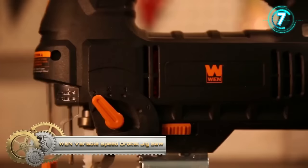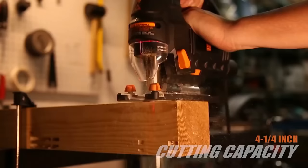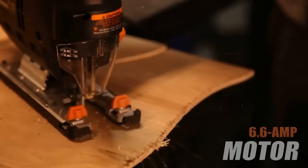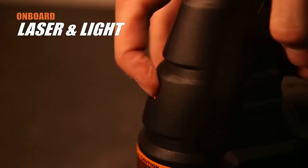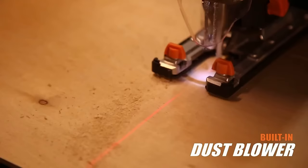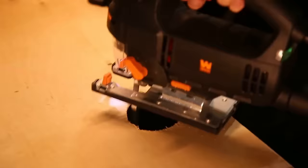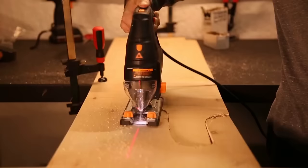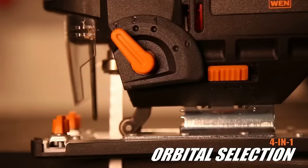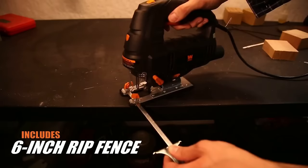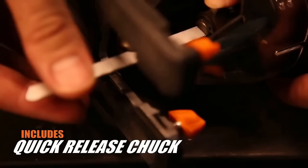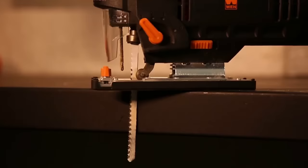The WEN 6.6 Amp Variable Speed Orbital Jigsaw glides through wood, metal, plastic and more, making any pattern or contour easy to achieve. The variable speed dial adjusts the stroke of the blade to anywhere from zero to 3,300 strokes per minute. Onboard laser keeps your line of cut right on target, while the front mounted LED light helps illuminate your workpiece. Attack wood up to 4 inches thick and metals up to 3/8ths of an inch thick. The orbital selection knob helps adjust the strength of the blade to match the density of the cutting material. Easily bevel the bottom base plate up to 45 degrees in either direction for angled cuts.